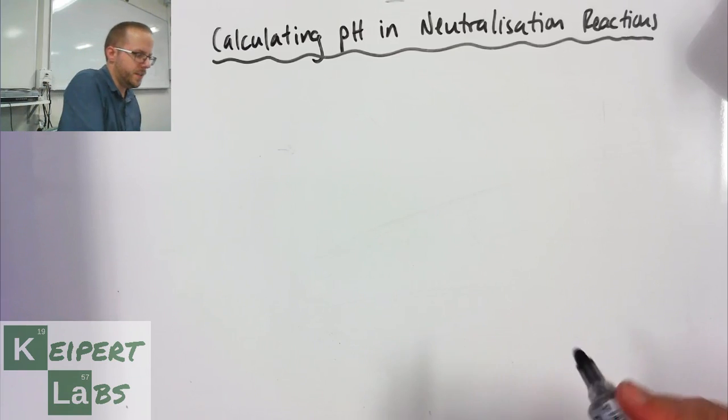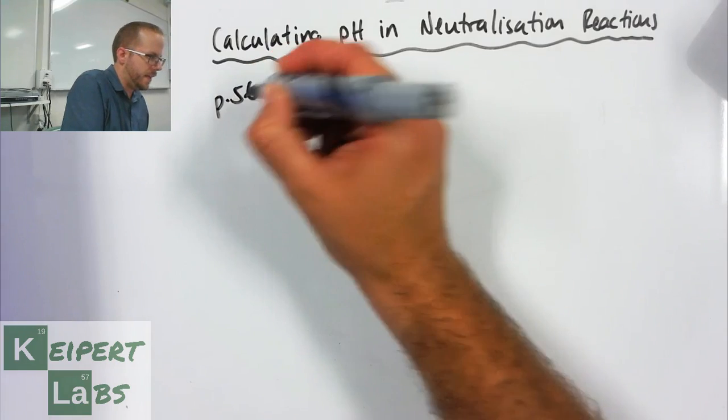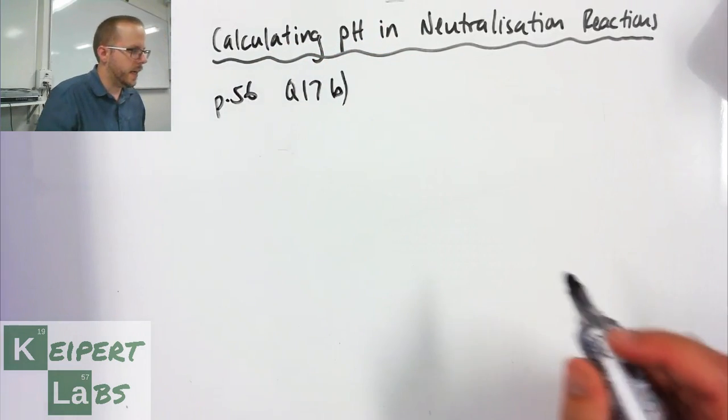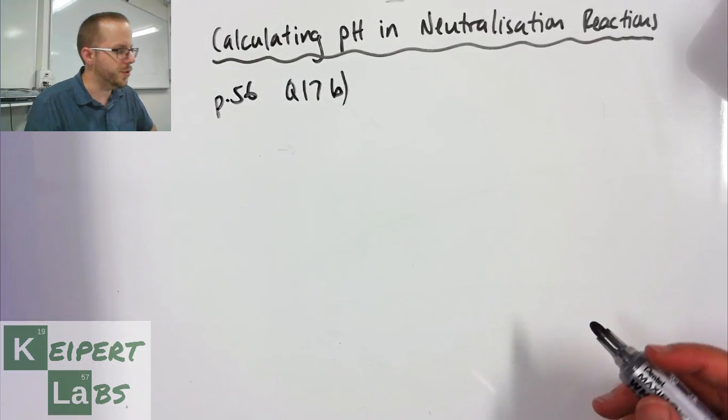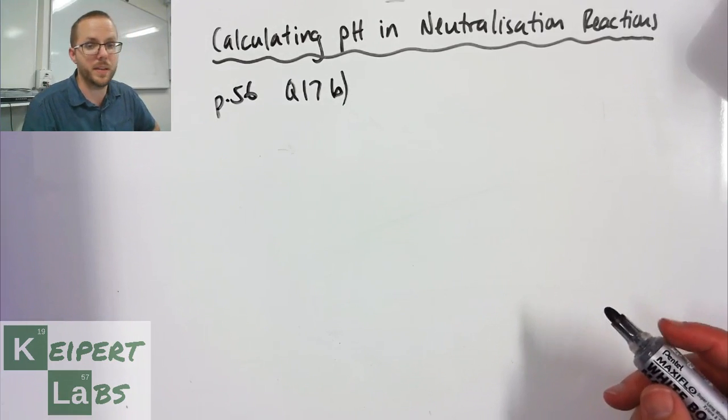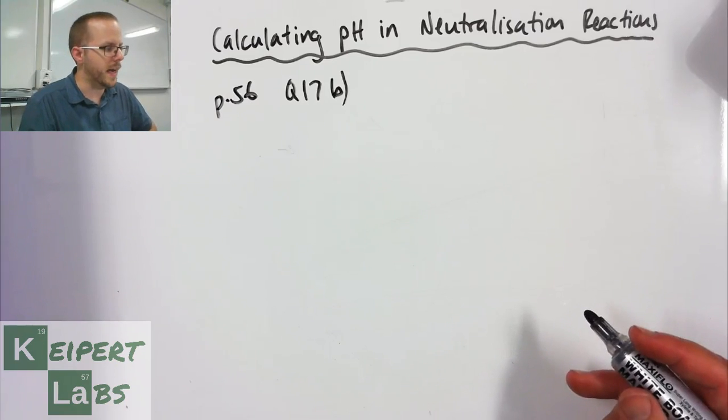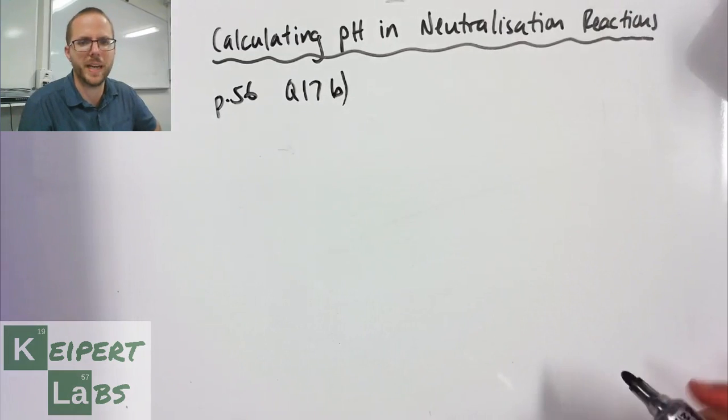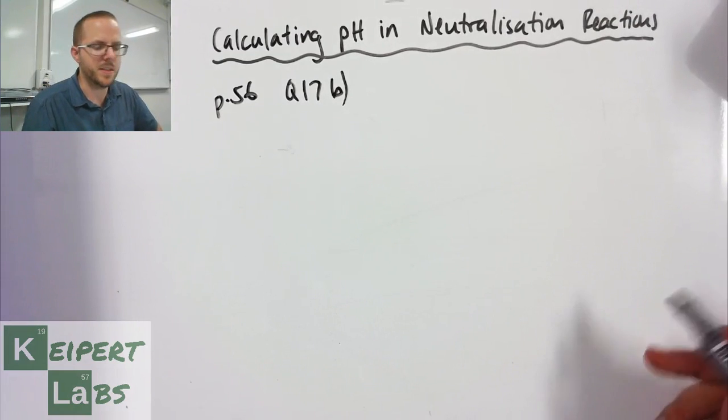So the first one, which is on page 56 and is question 17b, is calculating the pH of a solution after 20 mL of 0.01 mol per litre sodium hydroxide is added to 50 mL of 0.2 mol per litre hydrochloric acid, including a balanced equation in your answer.